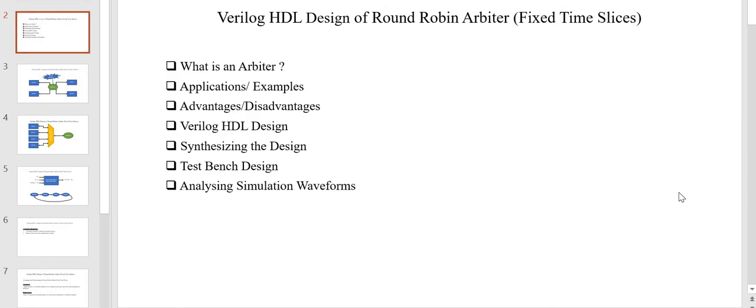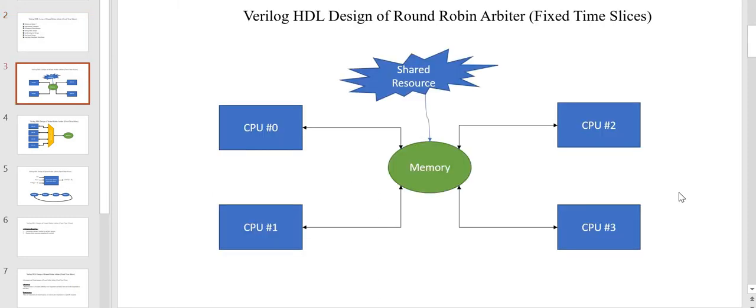First we are going to see what is an arbiter and what is the need of an arbiter in digital designs, then its applications and examples, the advantages and disadvantages of round robin arbiter, then we are going to implement the Verilog HDL of round robin arbiter and synthesize the design and simulate it using a Verilog test bench.